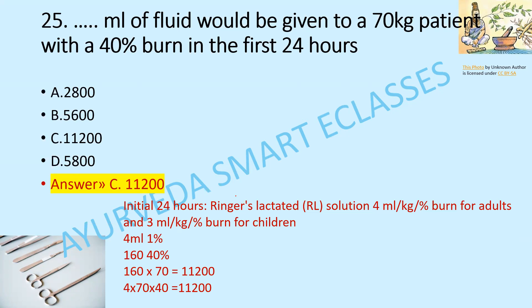We can calculate: 4 × kg × % burn = 4 × 70 × 40 = 11,200 ml. So, 11,200 ml of fluid should be given to a 70 kg patient with a 40% burn in the first 24 hours, calculated using Ringer's lactated solution.